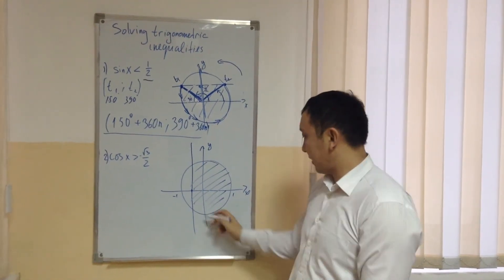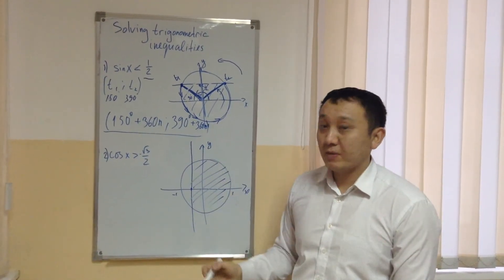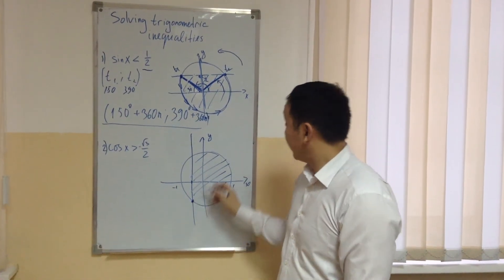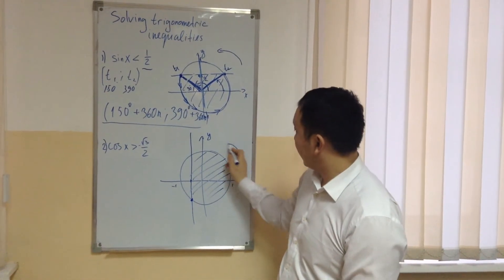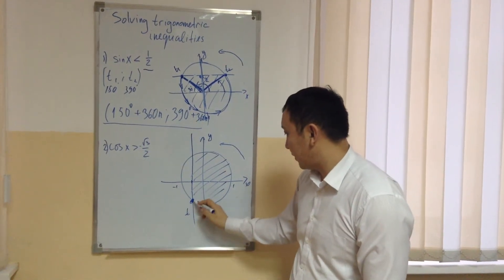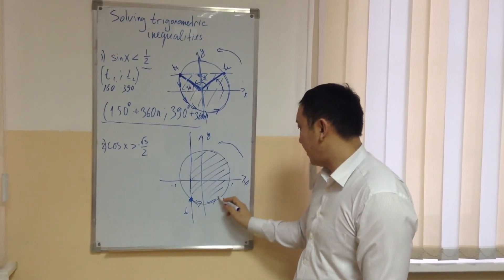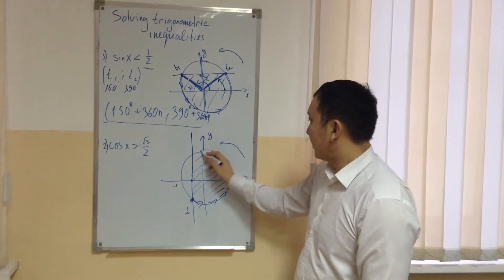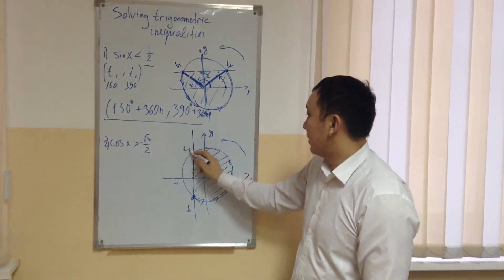So this arc, this part of the circle represents my solution. So again, we have to always move only counterclockwise. So my first point has to be this one, t1. I can start from this one and move until this point. This is my second point.